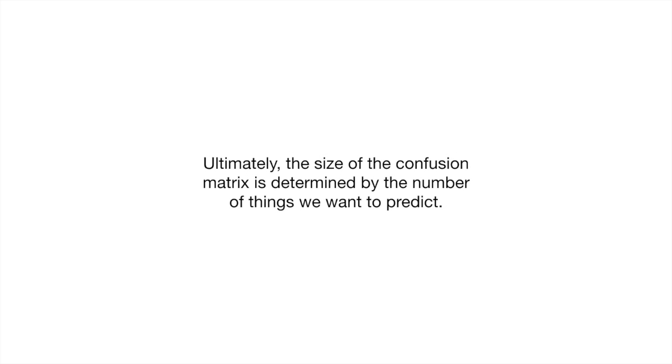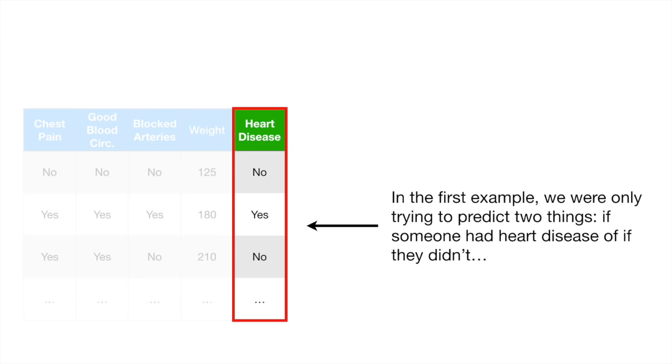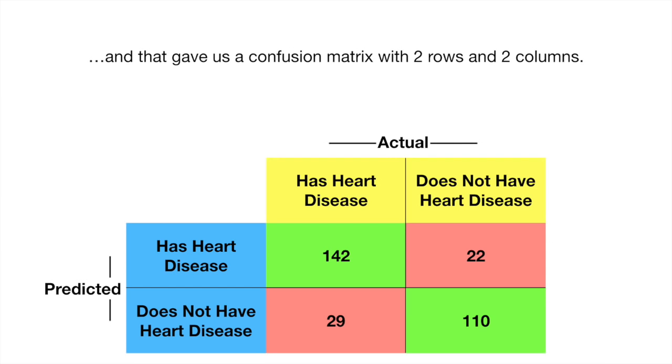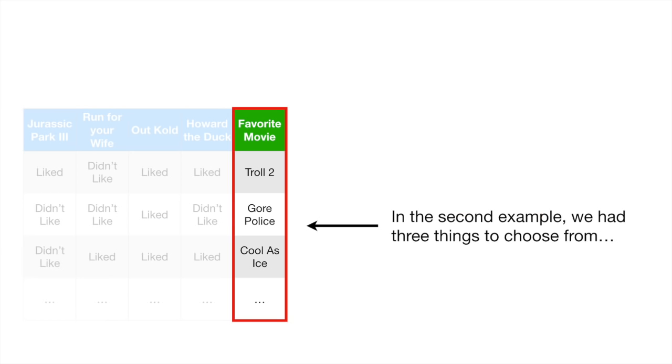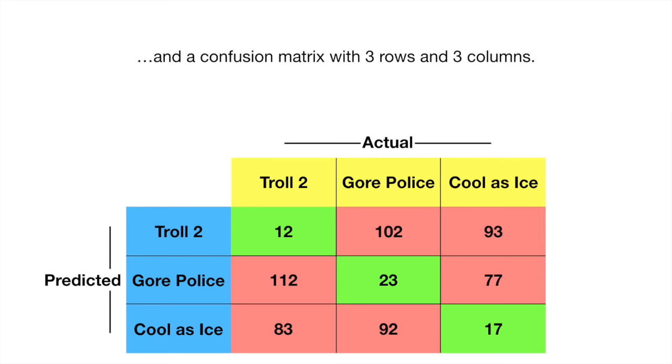Ultimately, the size of the confusion matrix is determined by the number of things we want to predict. In the first example, we were only trying to predict two things, if someone had heart disease or if they didn't, and that gave us a confusion matrix with two rows and two columns. In the second example, we had three things to choose from and a confusion matrix with three rows and three columns.